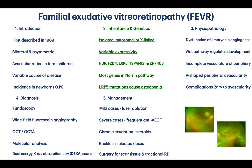The five most common genes are NDP, FZD4, LRP5, TSPAN12, and ZNF408. Most genes interfere with the Norrin or WNT pathway. Patients with LRP5 mutations usually have osteopenia.